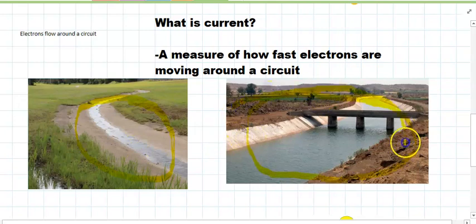On the other hand, if you had a high current, that's like this giant canal here. So a high current means electrons are flowing really fast through the circuit, so there's a lot of electrons flowing around.